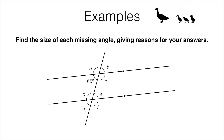Let's start on this example. First of all we need to work out what this angle here is. It's on a straight line together with this 65 degree angle, and we know that these two angles on a straight line must add up to 180 degrees. So A is simply going to be 180 minus 65, which will be 115 degrees. The reason is angles on a straight line add up to 180 degrees.